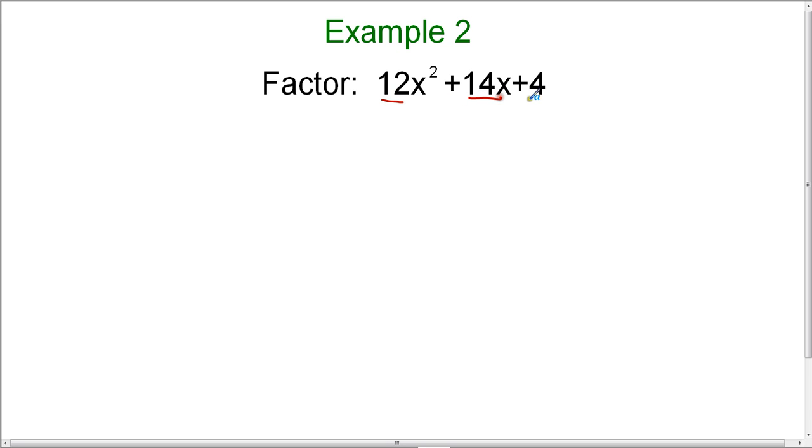When I look at this trinomial, I notice that 12, 14, and 4 are all divisible by 2. So I can immediately factor out a 2, and I'm left with 6x² + 7x + 2.